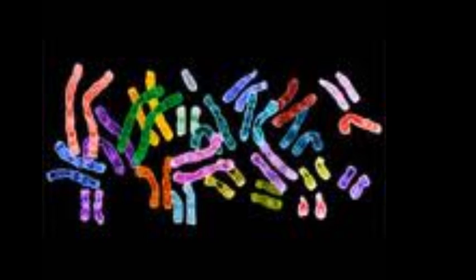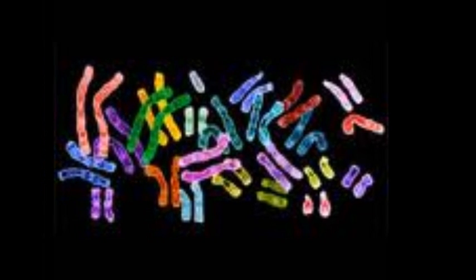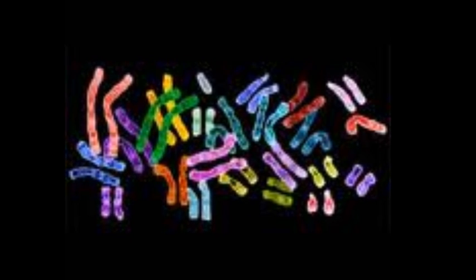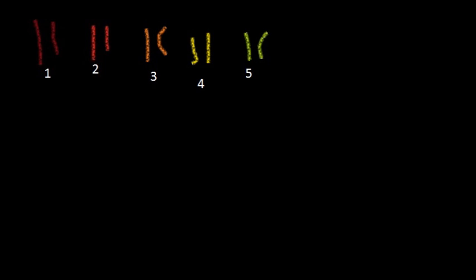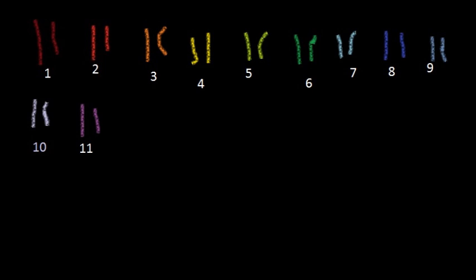These strands of DNA are found in tightly compacted bundles called chromosomes. Chromosomes, when organized in homologous pairs and lined up according to length, form a karyotype.